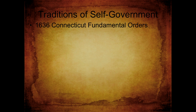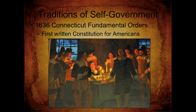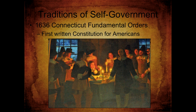Next we have the Connecticut Fundamental Orders — Connecticut is just above Massachusetts. This is the first written constitution for Americans. Connecticut would break off from Massachusetts and become its own colony, needing a constitution to separate it from all other colonies. A memory tip: Constitution and Connecticut both start with C-O-N. It wasn't a constitution for all Americans, but for the Connecticut people, and would be an example that other states and the federal government would adopt their own constitutions from. Remember, a constitution is a written form of how a government rules and governs itself.